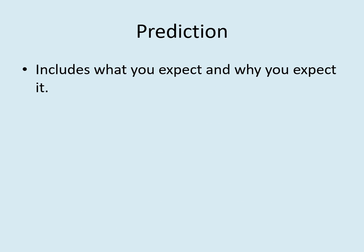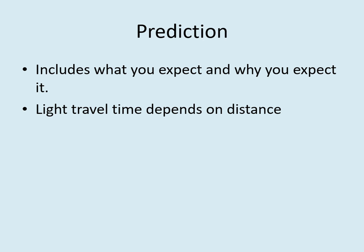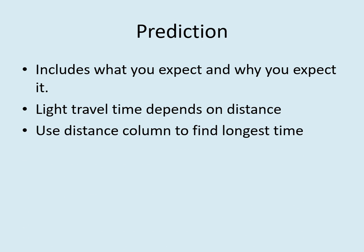Next, we do the prediction. Remember that there are two parts to any prediction: what you predicted and why. The why is important because without that, it's not really a prediction — it's just a wild guess. The time it takes light to travel from the star to any given planet will depend on how far away from the star each planet is. So you should look at the distance column of your mystery solar system table and decide which planet should have the longest light travel time. Also say why you picked that planet.